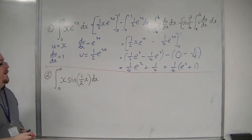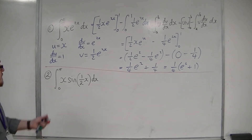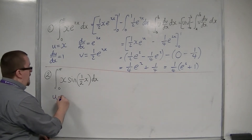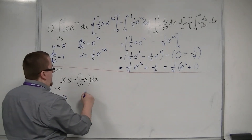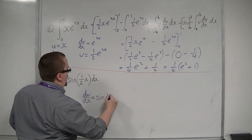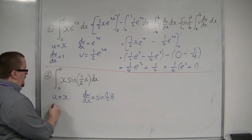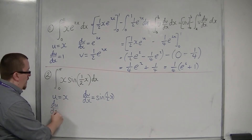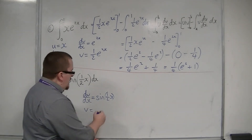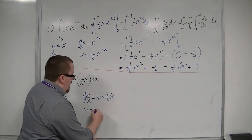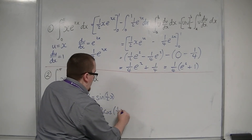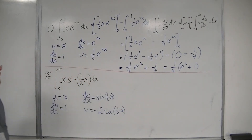Okay, so that's the first one. Now for the second one: x sine of one half x dx. First things first, u would have to be x, and dv by dx would be sine of one half x. So du by dx is 1. Integrating sine of one half x, we're going to get minus 2 cos of one half x, because sine integrates to cosine.